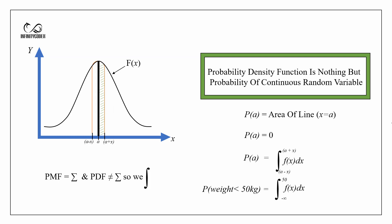So, the probability of weight less than 50 kg will be explained by this function. We use this for the empirical formula and z-score, which we will see in our future videos.